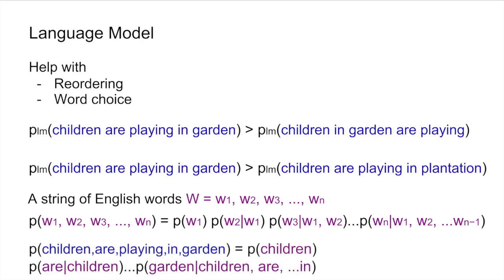For example, the probability of 'children are playing in garden' is computed as: probability of 'children,' times probability of 'are' given 'children,' and so on. By combining the phrase table probabilities and the language model probabilities, the phrase-based statistical machine translation system produces the final translation.